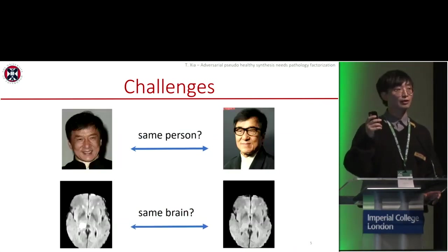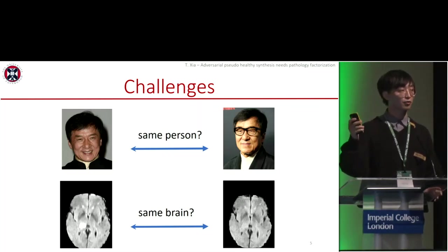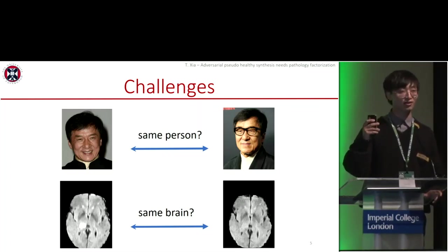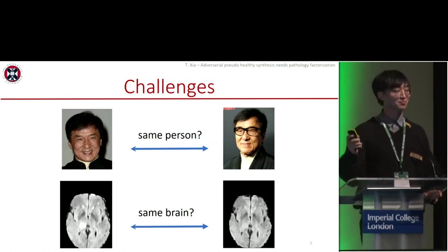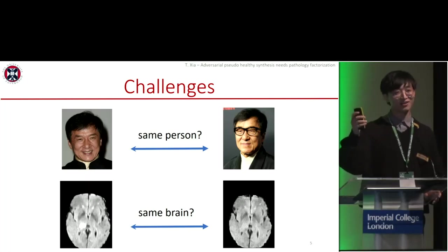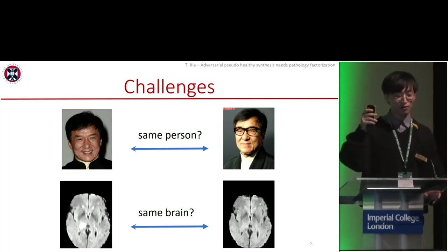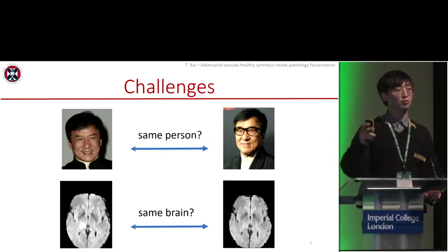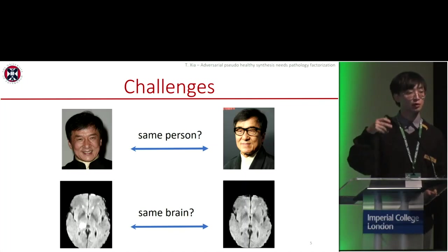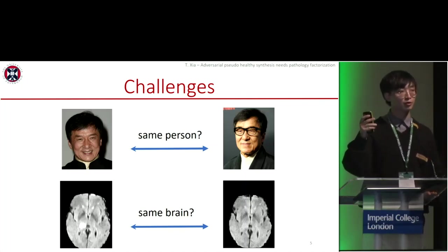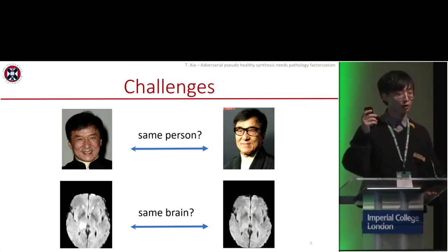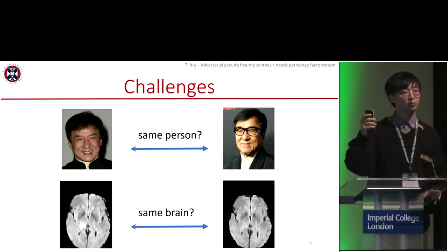Evaluation of identity is easy in some tasks. For example, we can easily tell that the top two photos both belong to Jackie Chan. But how do we know if two brain MRI images are from the same brain or not? It is difficult because human beings are sensitive to faces, but not sensitive to brain structure.